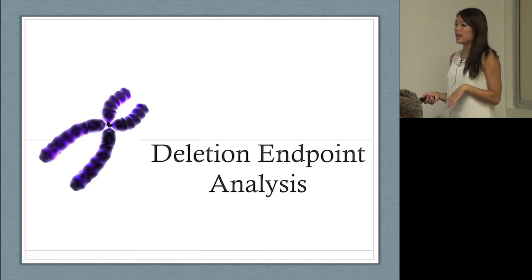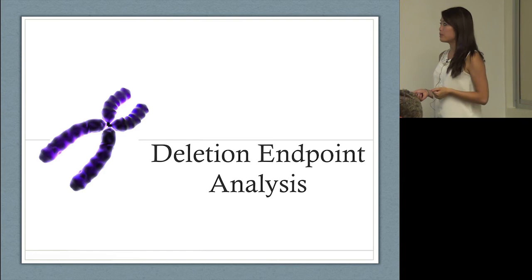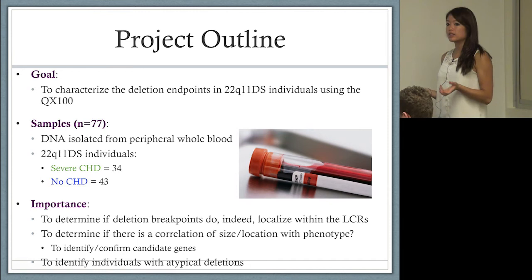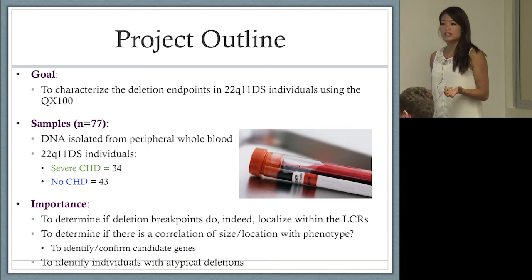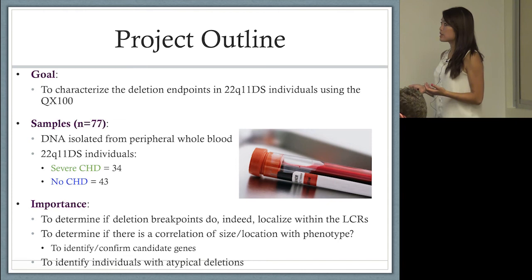Now that we have determined the feasibility of using this technology, we wanted to examine the endpoints. A lot of studies have looked at deletion endpoints in these individuals, but the sample number wasn't very large and they didn't include phenotypic information. We looked at 77 individuals and characterized them as 34 having severe CHD, individuals who needed surgery, or 43 individuals who didn't have any CHD.